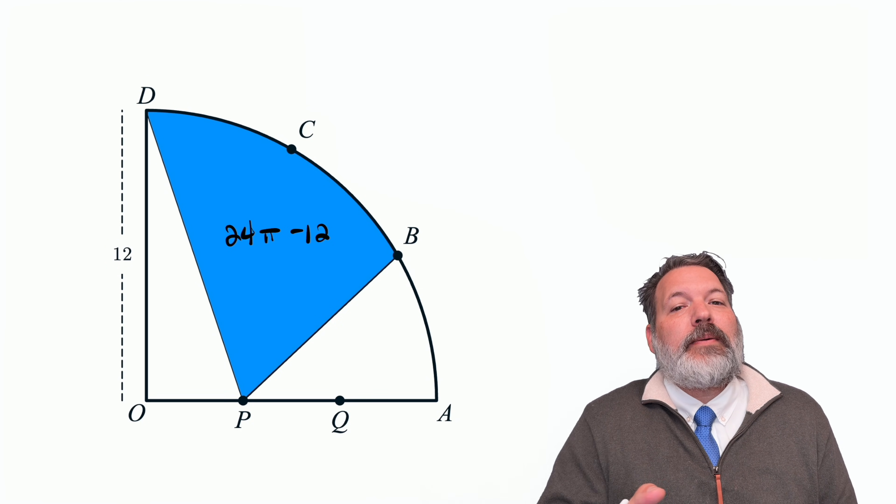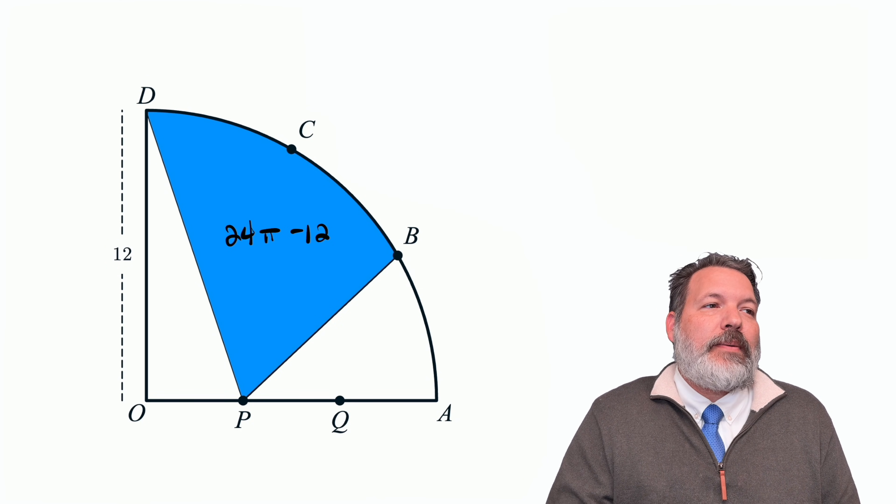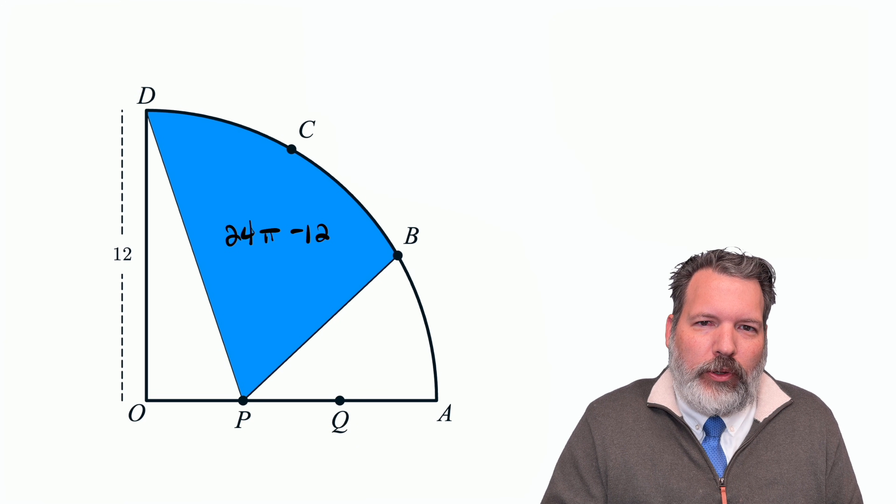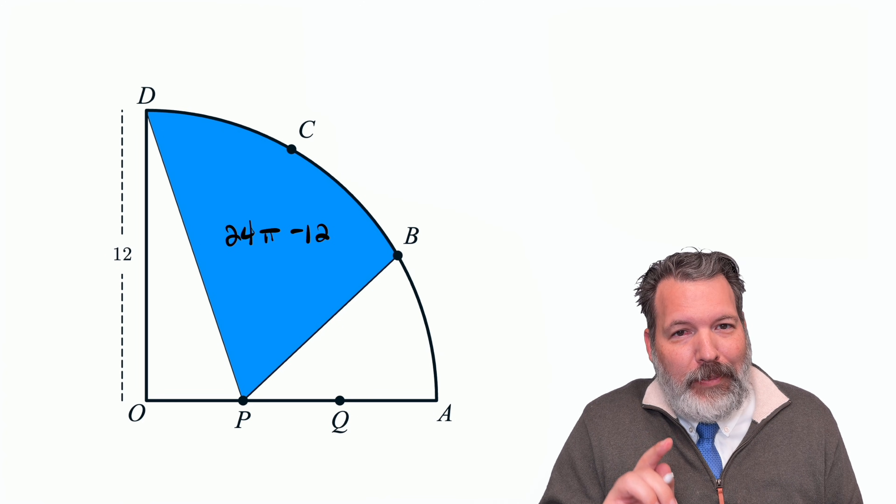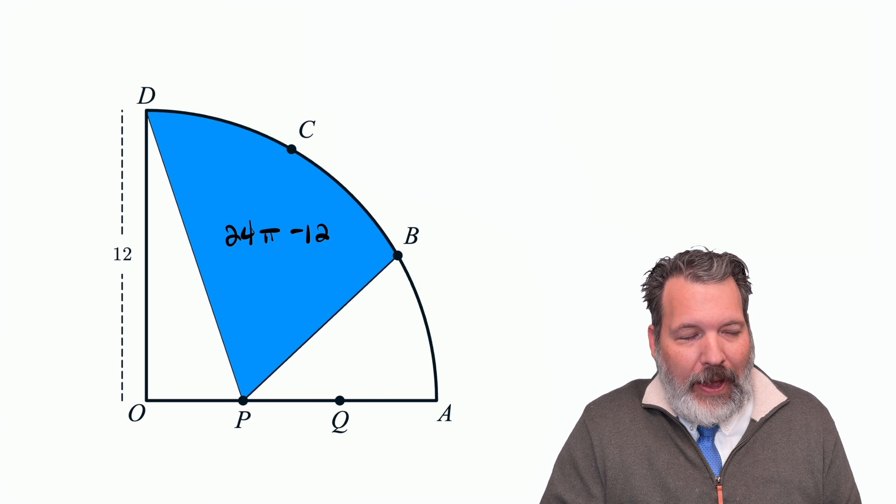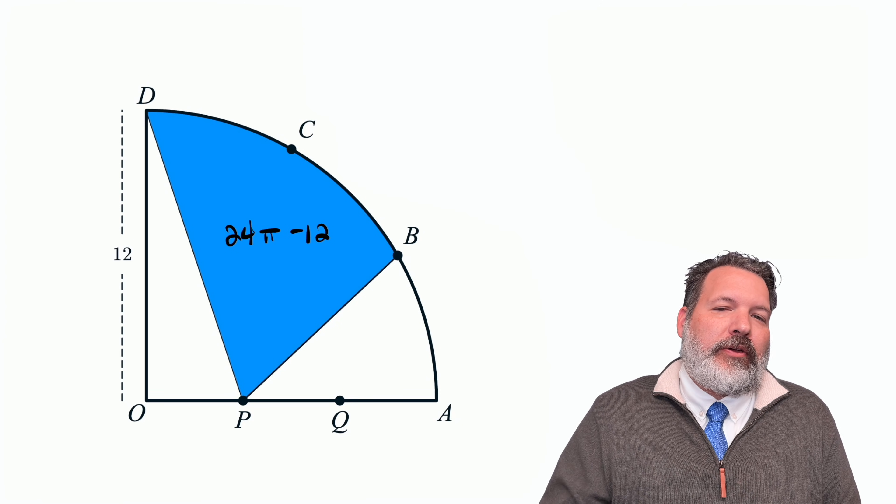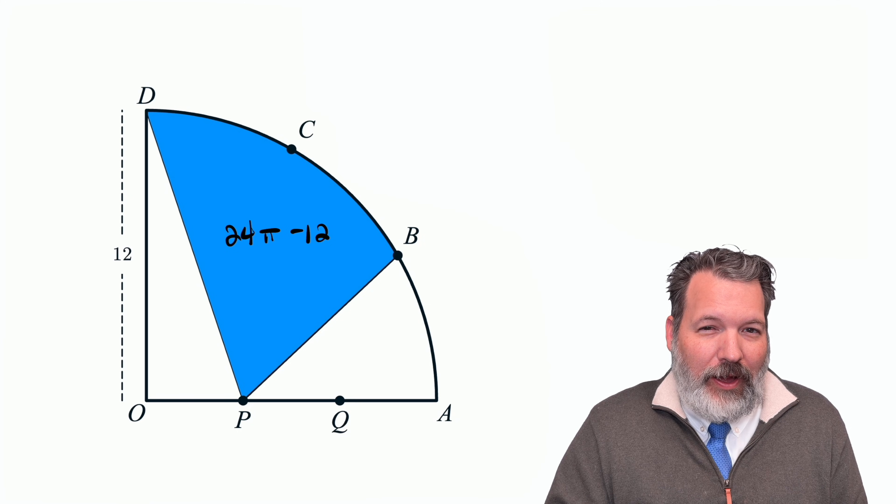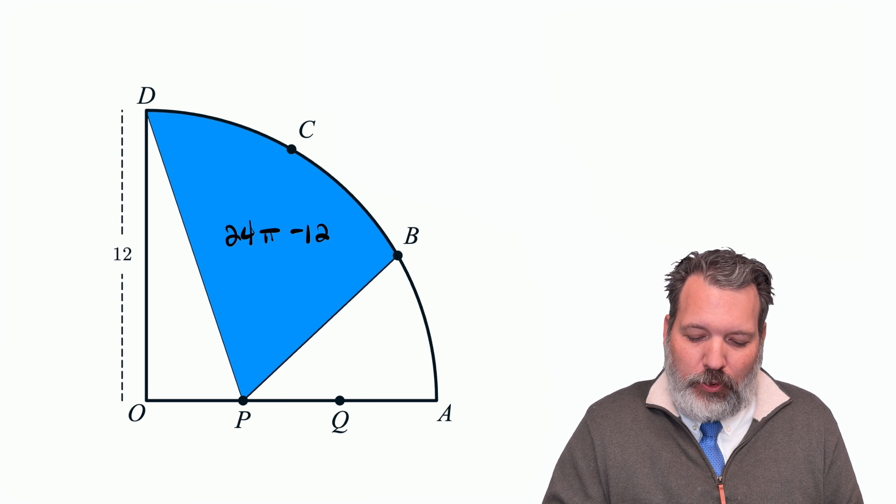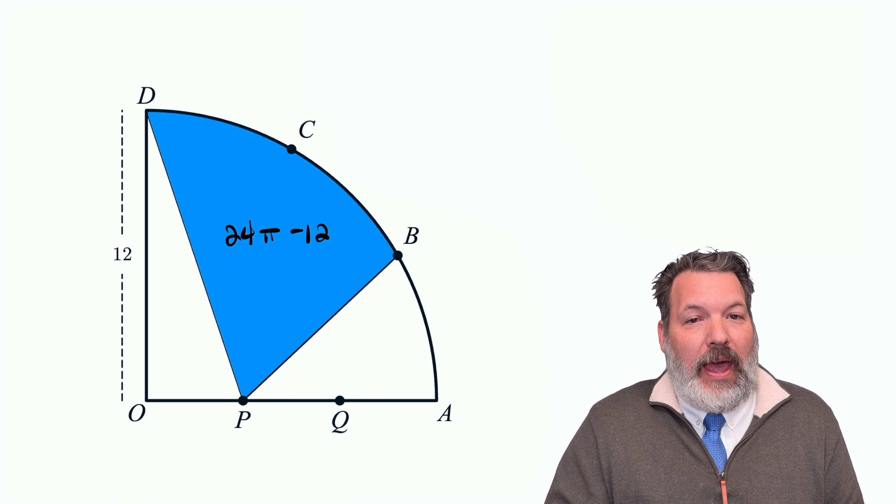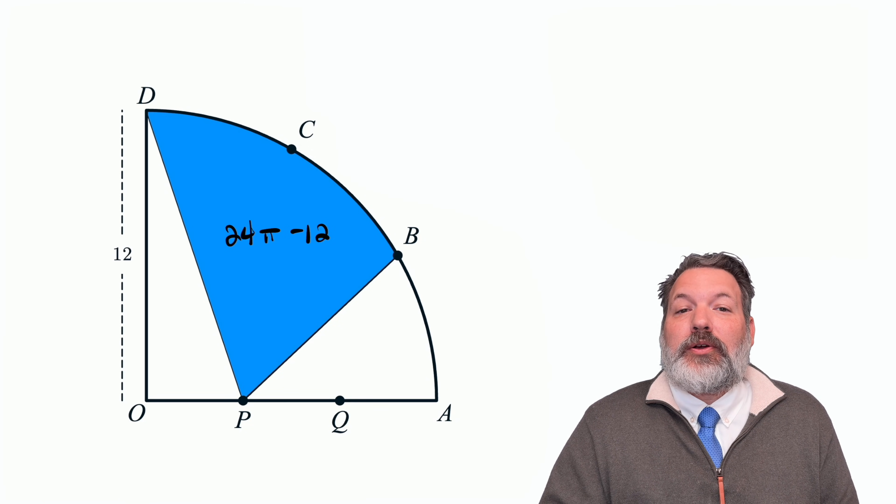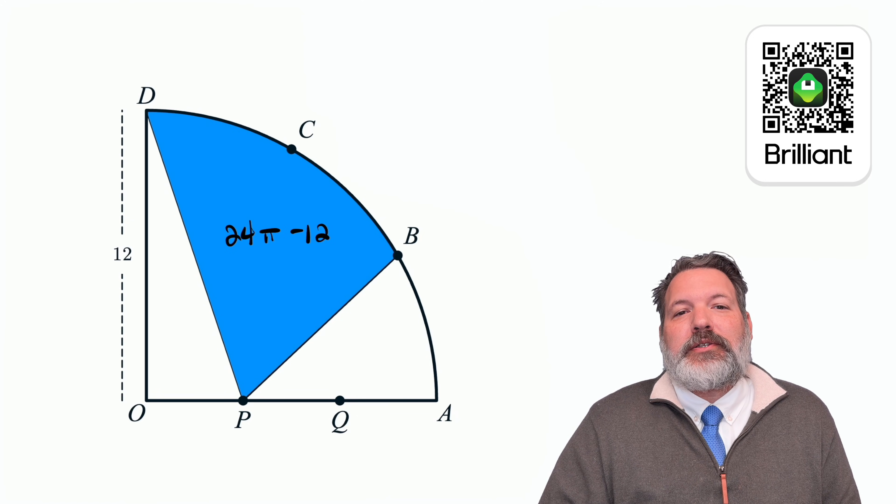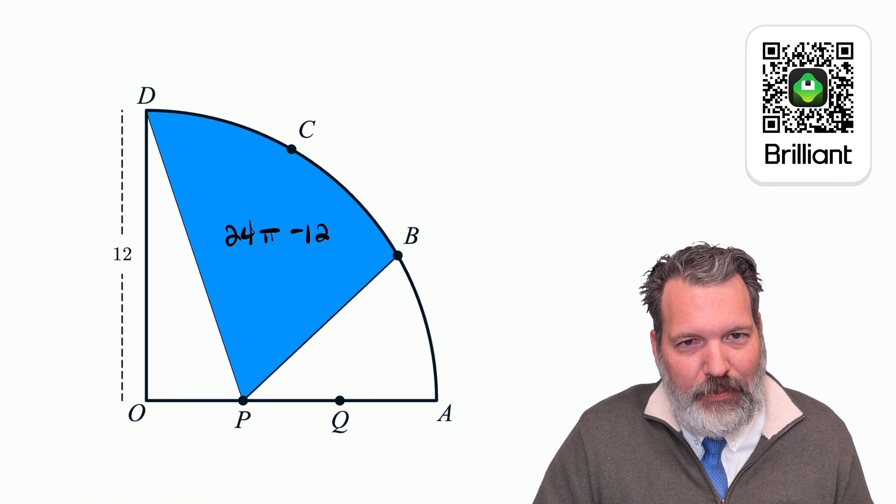That is the additional challenge that I'm going to leave to you as a viewer. Anytime I do these shaded region questions, people love to say, oh, just integrate in polar, which you totally can. And I'm eager to see you do it for me in the comments. Perhaps an easier thing to do for the less calculus minded among you, knowing the blue shaded region area now, who can give me the area of the weird, almost circular wedge shaped piece PBA? Not the most complicated calculation in the world, but a good little follow up that I want to see from you. Thank you again to Brilliant.org for sponsoring today's video. Please check out Brilliant.org slash polymathematic.